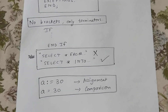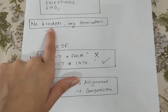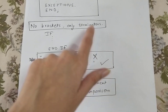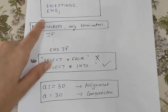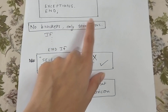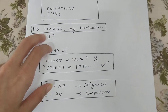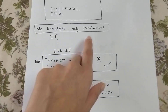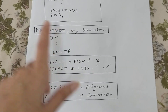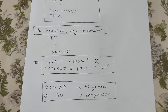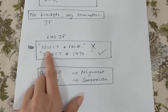There are a few important things to remember in PL/SQL. First, there are no brackets — only terminators. Unlike Java or C where we use curly brackets for conditions, in PL/SQL we do not have curly brackets. Instead, for example, an IF statement is closed with END IF.